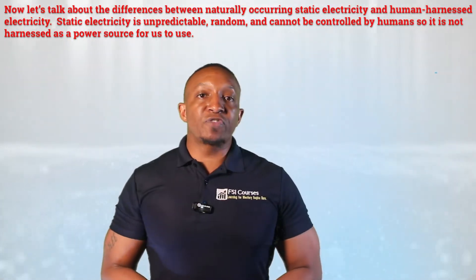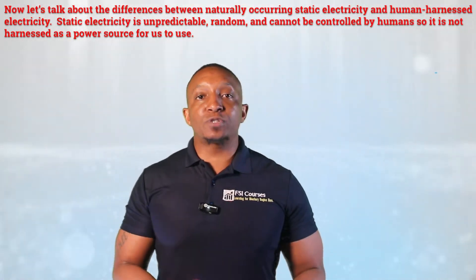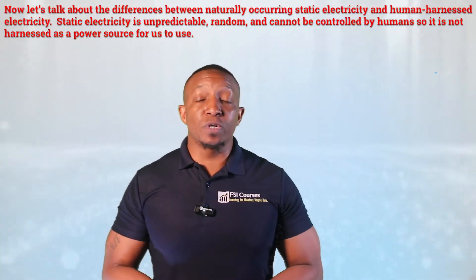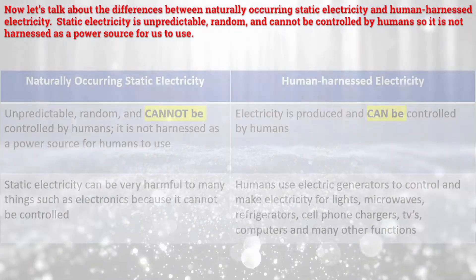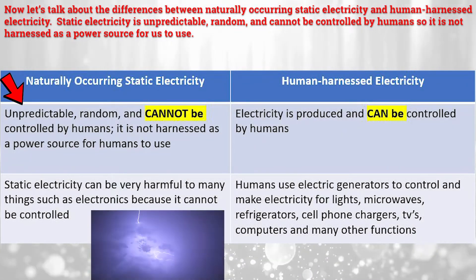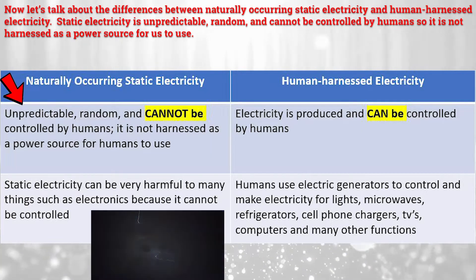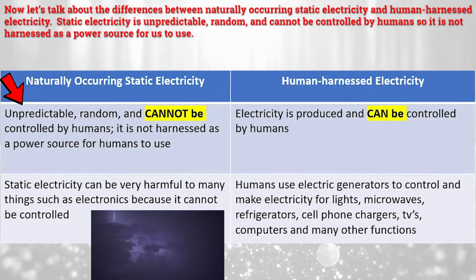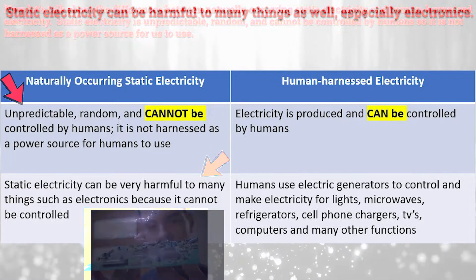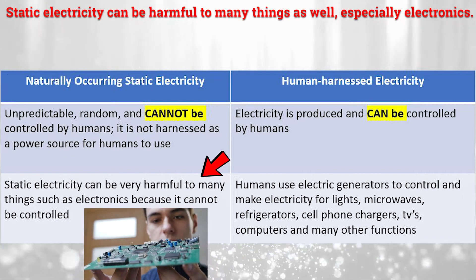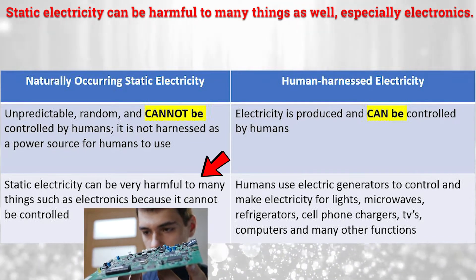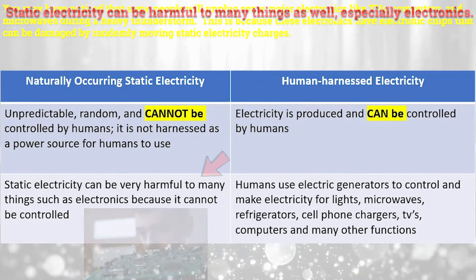Now let's talk about the differences between naturally occurring static electricity and human-harnessed electricity. Static electricity is unpredictable, random, and cannot be controlled by humans, so it is not harnessed as a power source for us to use. Static electricity can be harmful to many things as well, especially electronics.